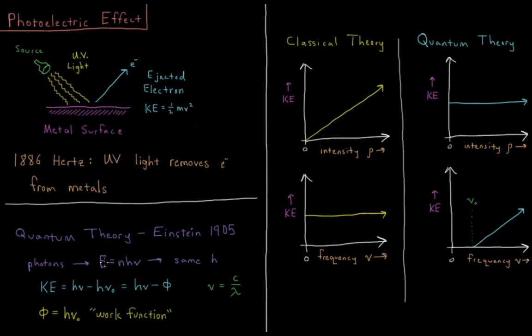If you have n photons, the energy that's hitting the metal is n times hν, the energy per photon.